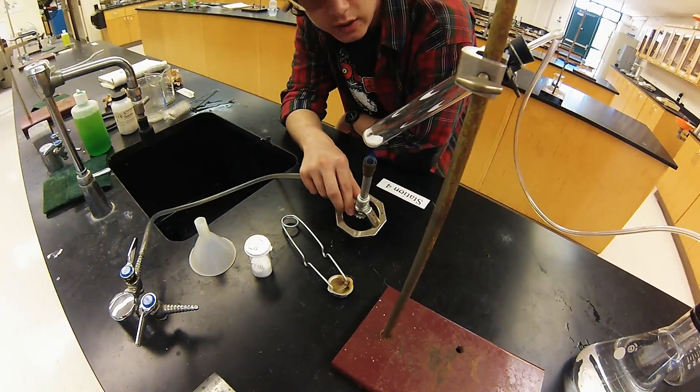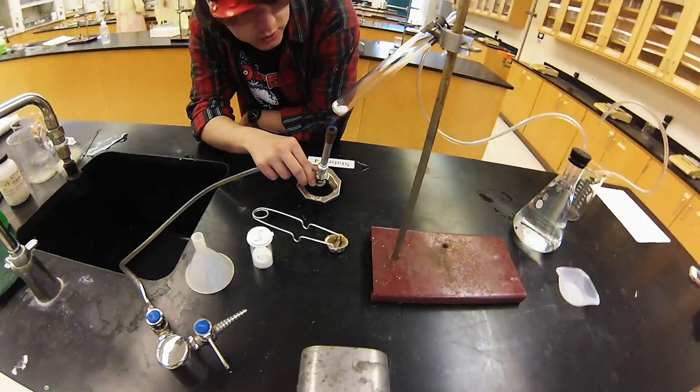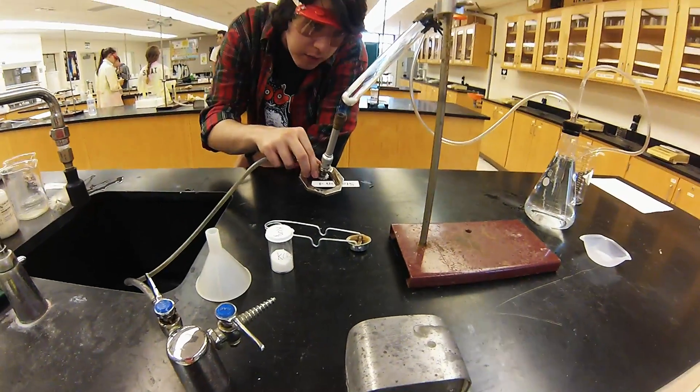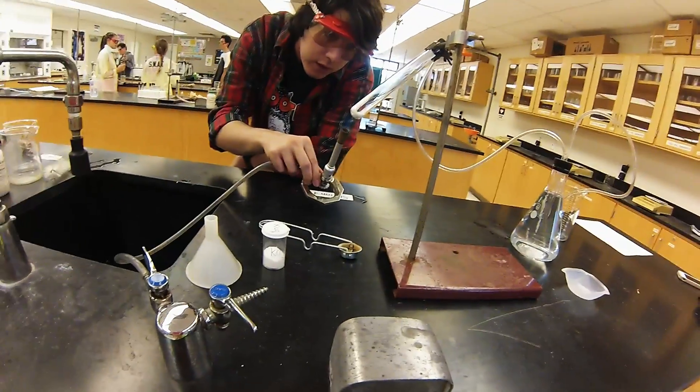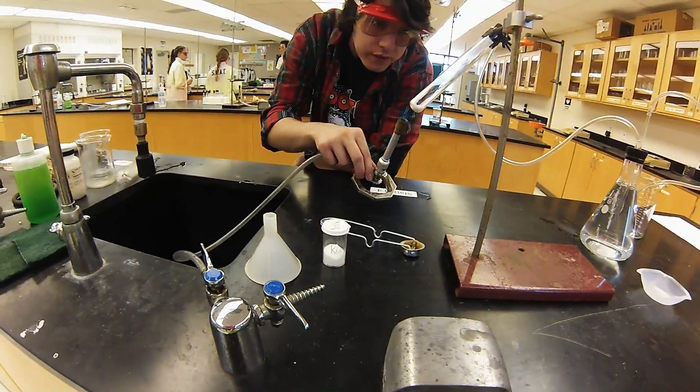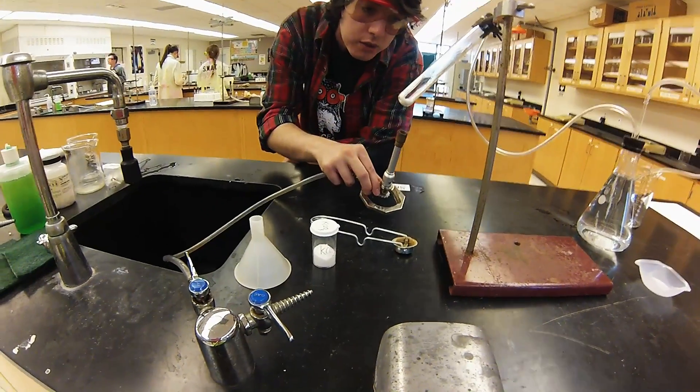When you first start heating the material, you want to make sure to pick up the Bunsen burner and sort of evenly distribute the heat throughout the sample. You don't want it just burning on the bottom at first.